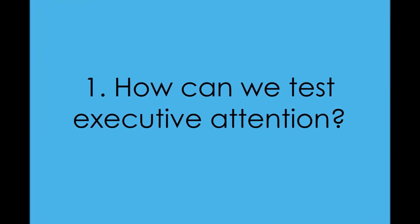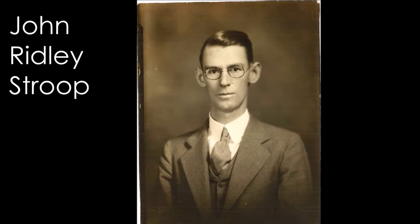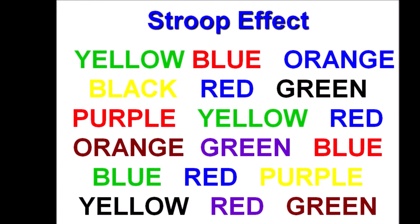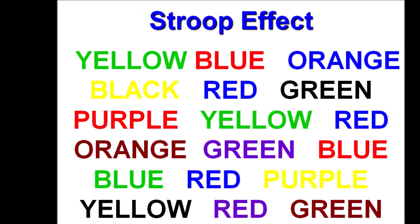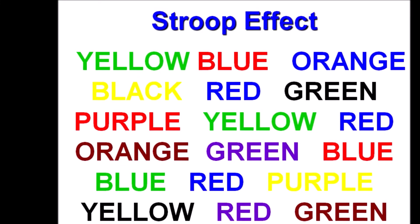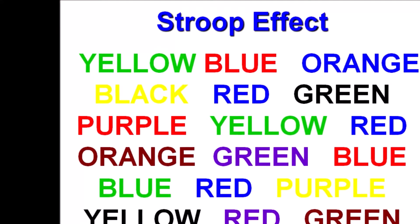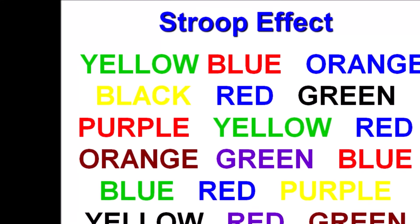How can we test executive attention? John Ridley Stroop devised an ingenious test to study automatic reading in 1935. In this test, the color terms — for example, red, yellow, blue, and green — are printed in incompatible colors. For example, the first word 'yellow' appears in green color. The task is to say aloud the color of the ink while ignoring the meaning of the word itself. So when you see the word 'yellow' written in green color, you must say 'green' and not 'yellow.'